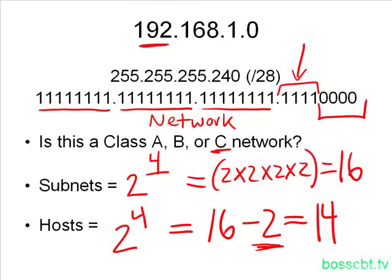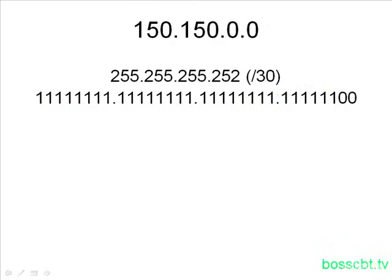Let's go ahead and look at another example. Here we're going to look at 150.150.0.0. That is our network number, and the subnet mask we're going to apply to it is here, 255.255.255.252, which is known in prefix notation as a slash 30, because we're adding up all the one bits in the subnet mask, and there are 30 of them.